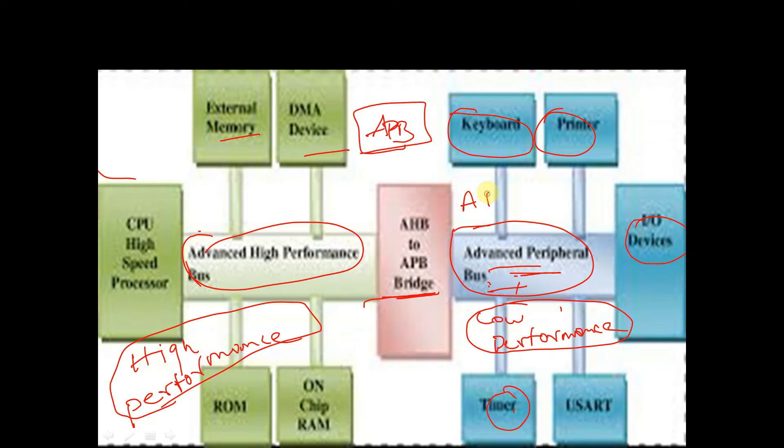APB interface is used for connecting low performance devices. The APB interface is designed for accessing programmable control registers of peripheral devices, and APB peripherals are typically connected to the main memory system using the APB bridge. The APB interface is not pipelined — it is a simple synchronous protocol, and every transfer takes at least two cycles.